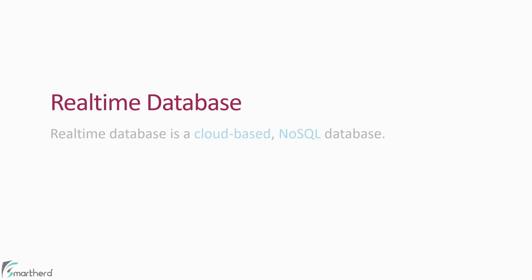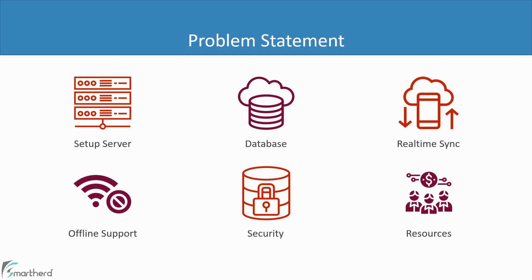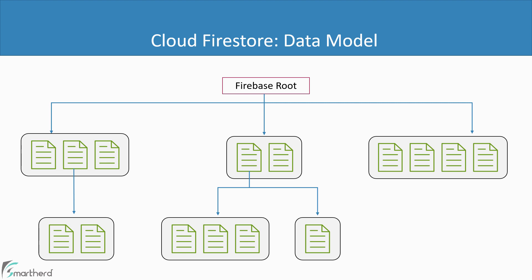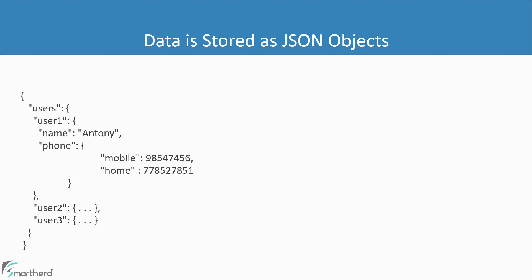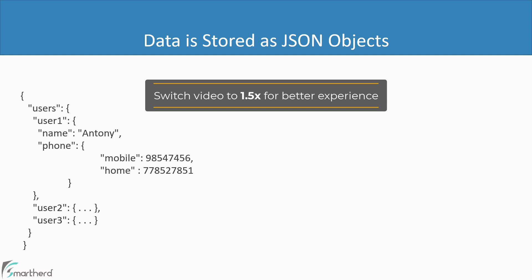Similar to Cloud Firestore, Real-Time Database is also a cloud-based NoSQL database and solves all the same problems. But the major difference comes when we compare how data is stored within these two databases. Data in Firestore is stored in the form of documents and collections. But in Real-Time Database, the data is stored as JSON objects. This is a sample example of a JSON object with nested JSON objects — the root users node, further containing data for each user such as user1, user2, and so on.